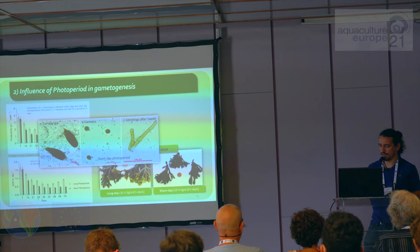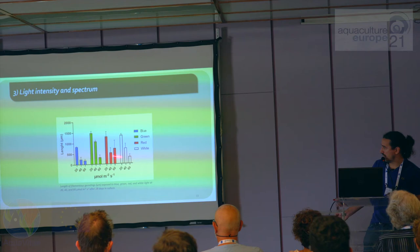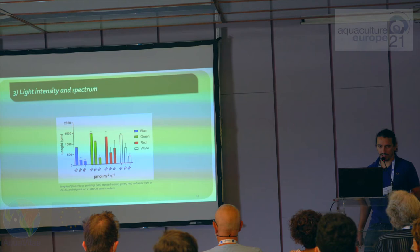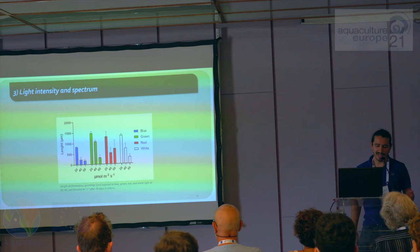Looking at light spectrum and intensity, regardless of the light spectrum applied, we always get better growth performance at the lower light intensity — 20 microeinsteins compared with 40 and 60. This suggests that 20 microeinsteins is sufficient to support growth of these germlings, and that higher intensities are likely causing some degree of photoinhibition.